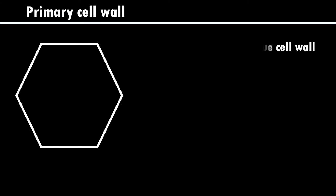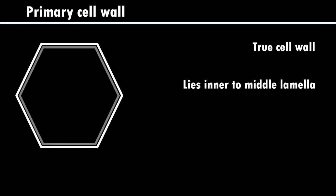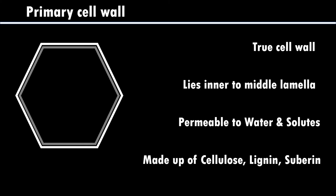When we study the primary cell wall, it is the true cell wall found in plants. It lies inner to the middle lamella, and it is permeable to water and solutes. It is made up of cellulose, lignin, and suberin.